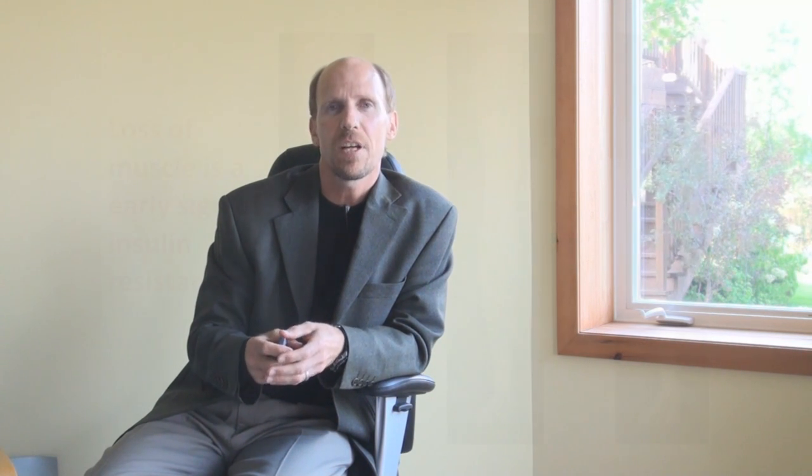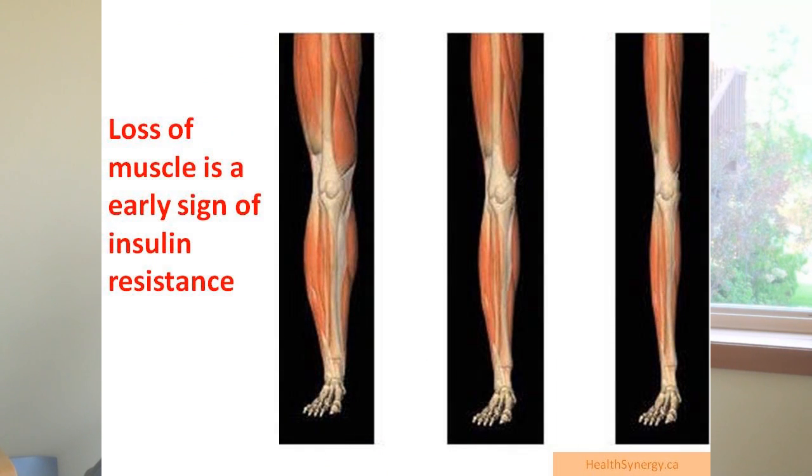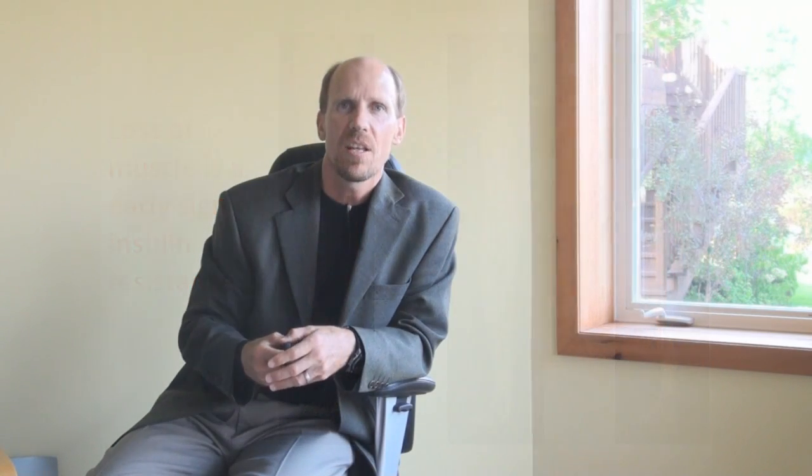Finally, when you have your BIA or DEXA scan done, look at something called sarcopenia — the loss of muscle. Muscle is really important because researchers now understand that insulin resistance and problems with insulin precede the loss of muscle. So if you've lost muscle and have extra fat deposition, this is called sarcopenic obesity, and that's a bad sign that takes you on the road to type 2 diabetes and cardiovascular disease.